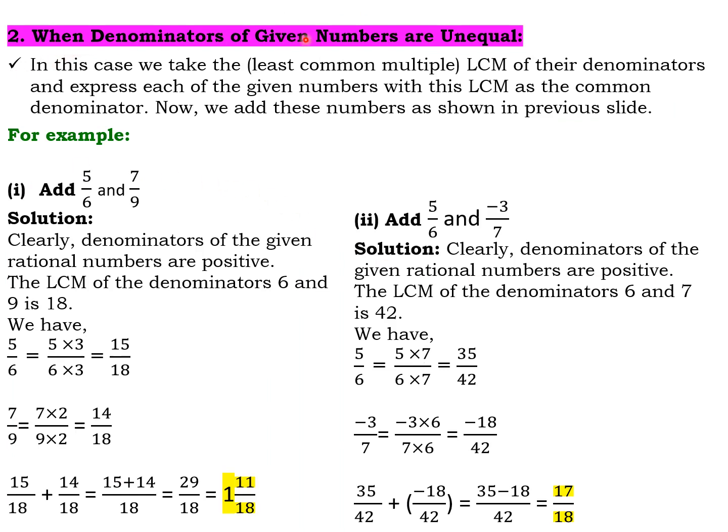The second case is when denominators of given numbers are unequal or different. In this case, we take the LCM of their denominators and express each of the given numbers with this LCM as the common denominator. Now we add these numbers as shown in the previous slide. We will find the LCM of the denominators, then change the rational numbers to equivalent rational numbers having same denominators.